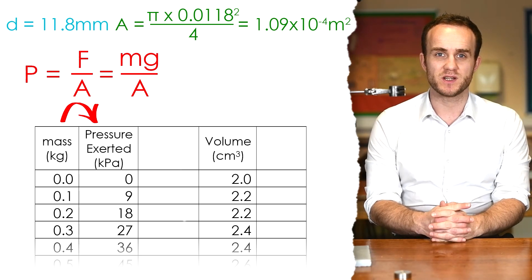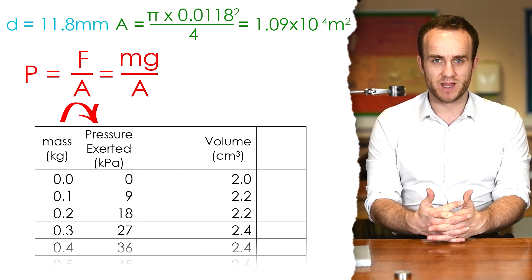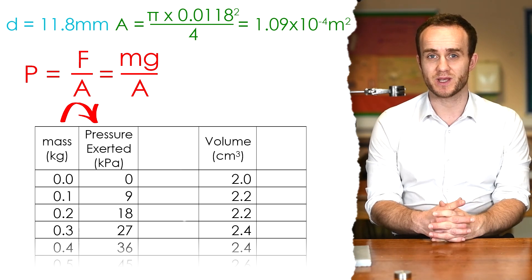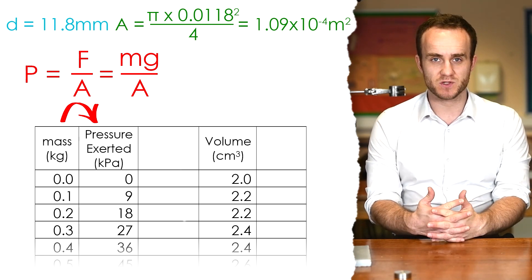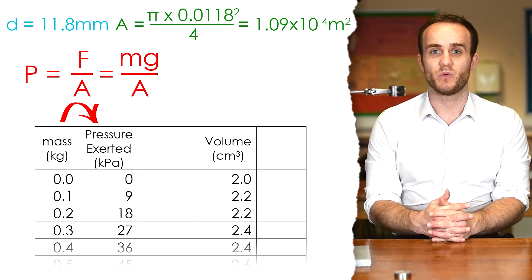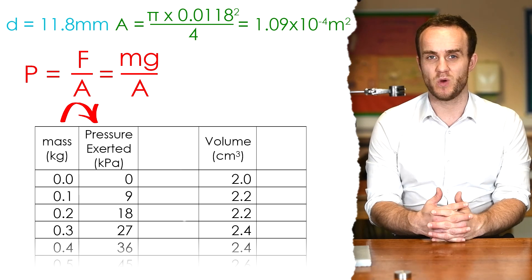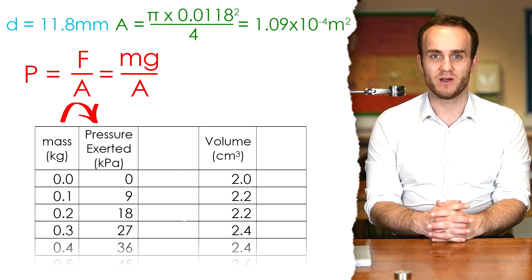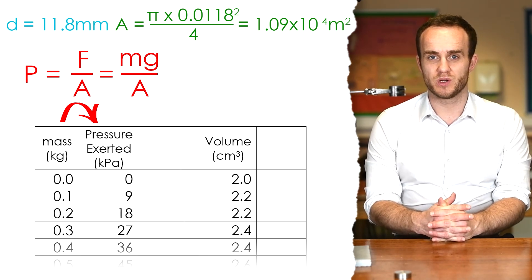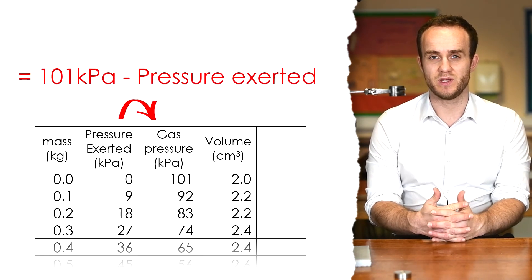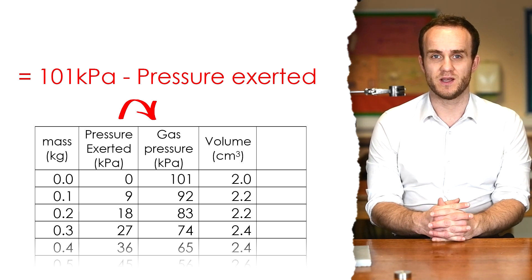Now in order to calculate the actual pressure in the gas, we need to take our atmospheric pressure, 101 kilopascals, that's what the gas was initially, and subtract the pressure that we were pulling on it with, due to the force from the mass, the weight. So, for our first result, we take 101 kilopascals and take away 9 kilopascals, and that leaves us with the actual pressure in the gas.